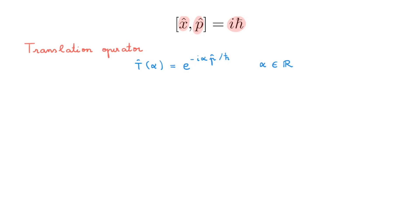For the time being we're going to take this as the definition of the translation operator, and only later in the video we're going to prove that it actually translates by an amount α. You may wonder what it means to have a function of an operator, like the exponential here. The short answer is that the function of an operator is defined by its Taylor expansion — check the link in the description for full details.